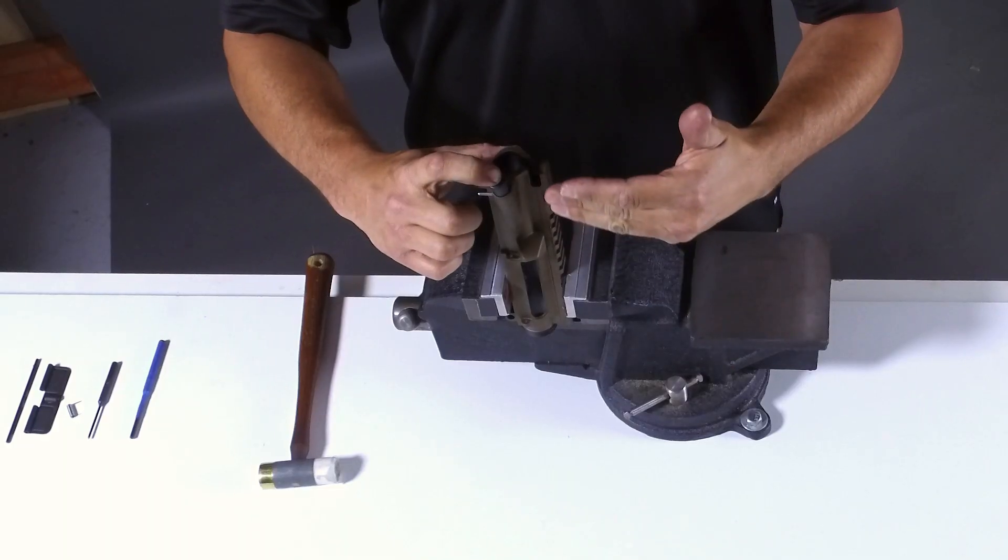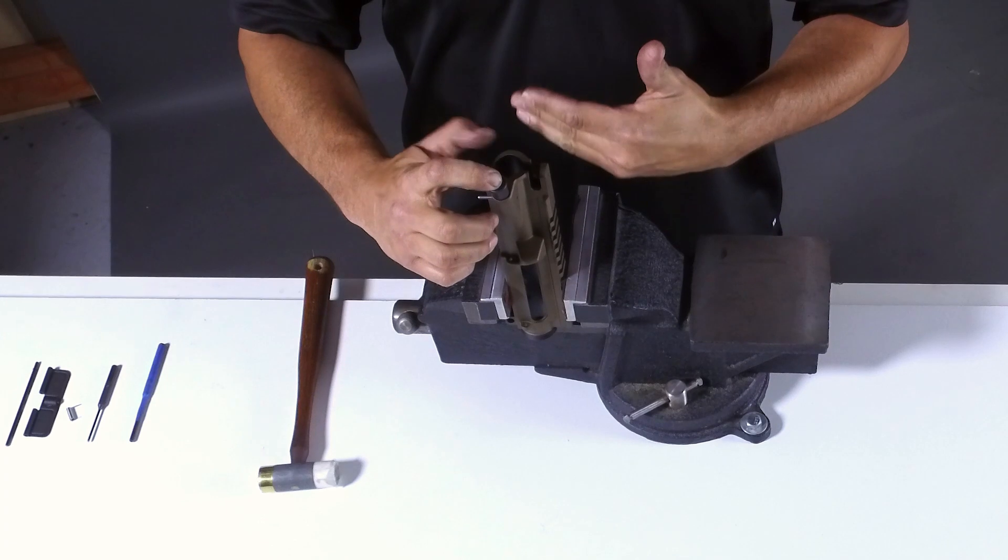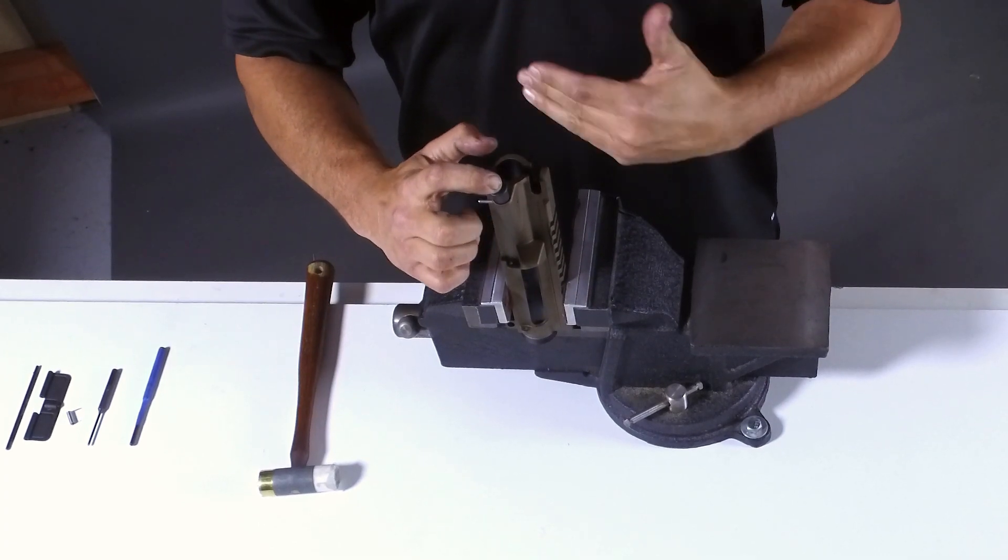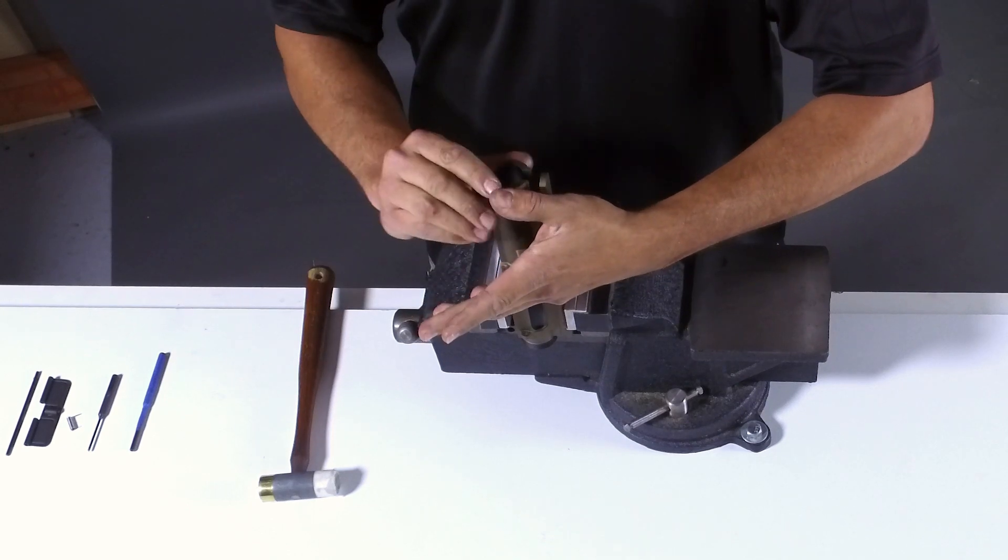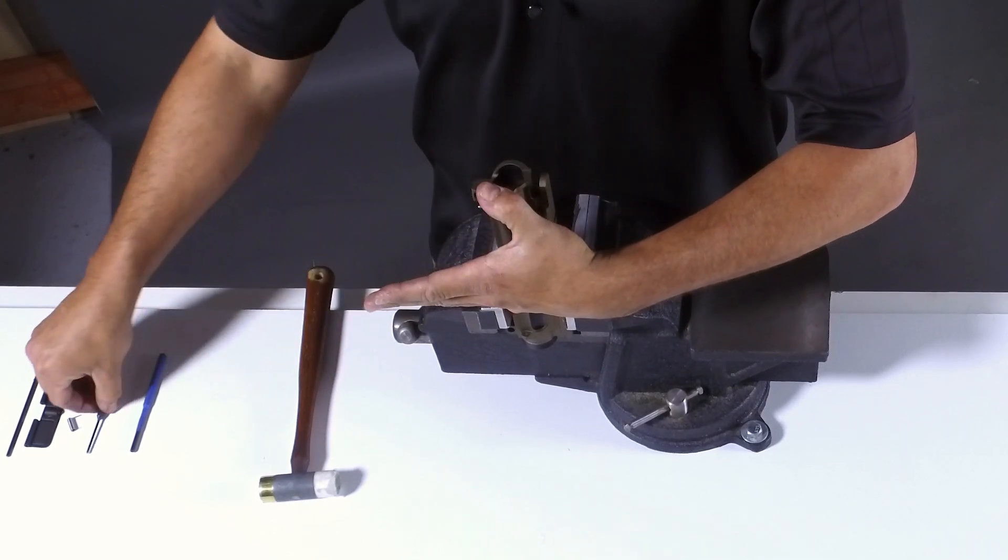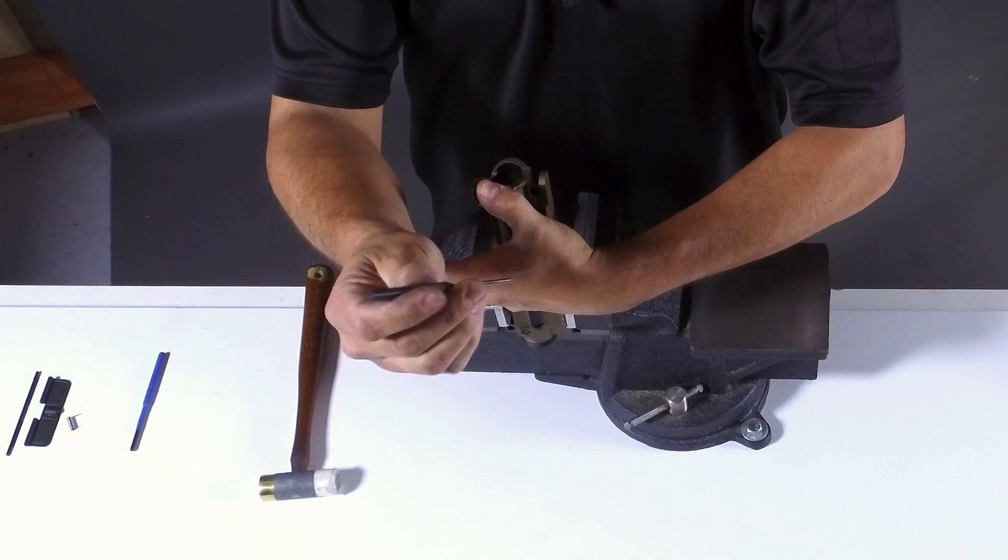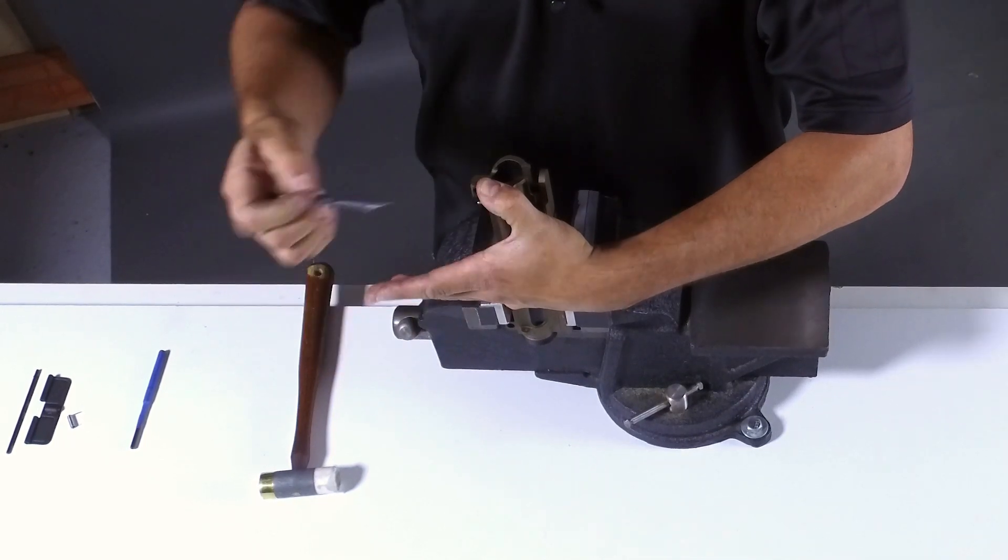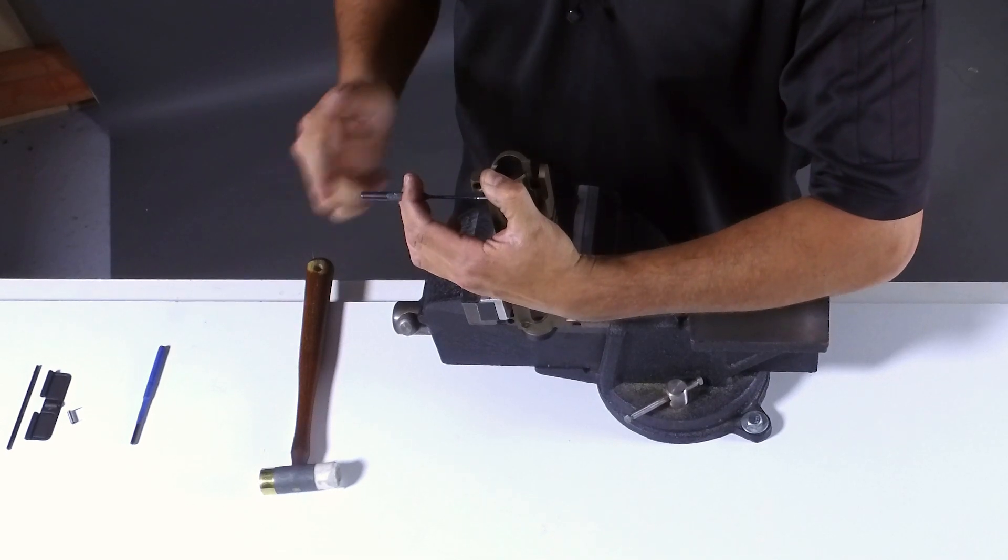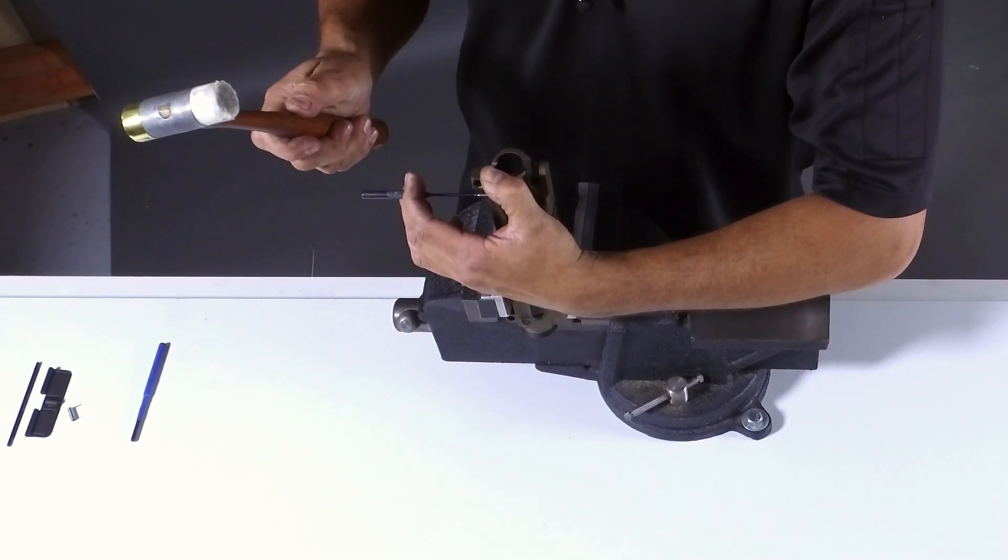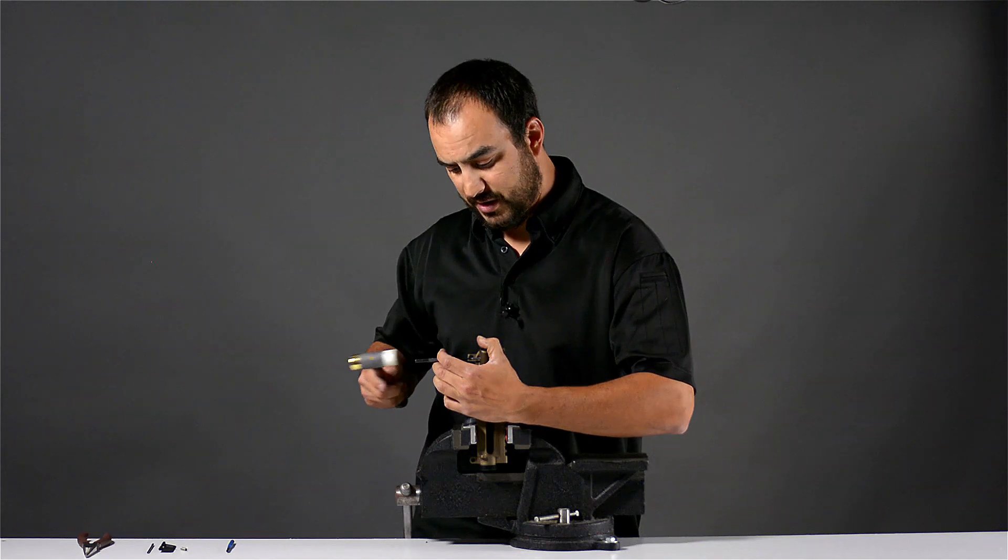We are going to push it down. We are going to grab a 3/32nd roll pin punch, put it on the edge of the roll pin, secure it with our hand, and using the delrin side of the hammer, we are going to start to tap it in.